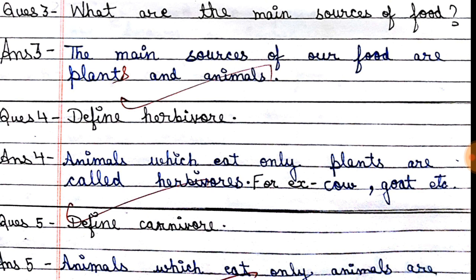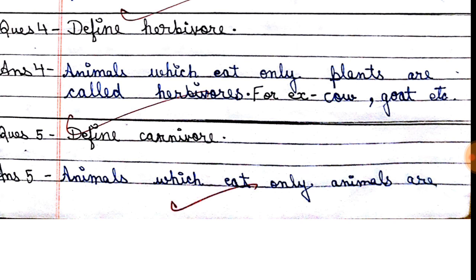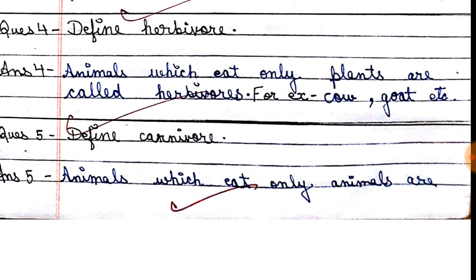Next question: define herbivore. Animals which eat only plants are called herbivores. Such animals that eat only grass and other plant products — for example cow, goat — are called herbivores.